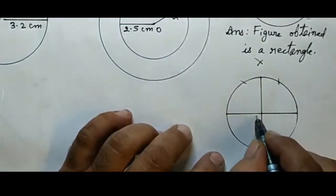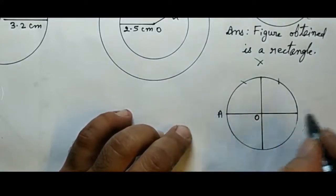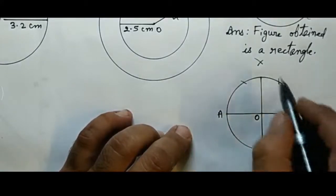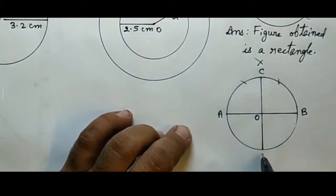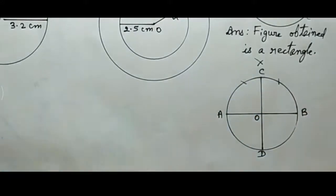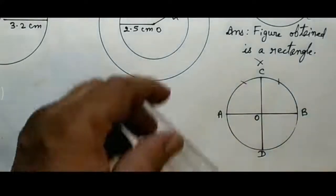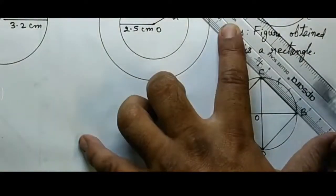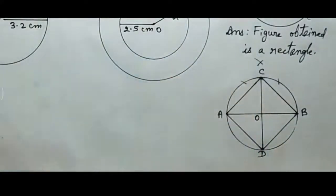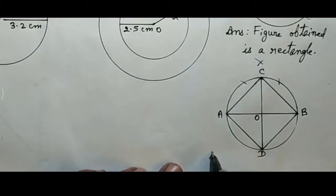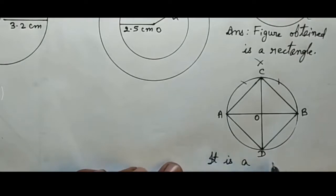Here you can see, according to the question, we have drawn this. Now join points A, B, C, D. Which figure is obtained? The figure obtained is a rectangle. The 1st figure is a rectangle and the 2nd figure is a square, because all the sides of this are equal.